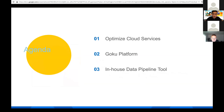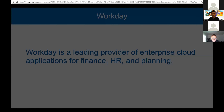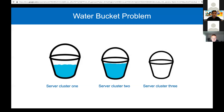Here is today's agenda. First, I'll talk about the problems we're trying to resolve and what our cloud services look like. Afterwards I'll talk about the Goku platform — our in-house platform. Lastly I'll talk about our in-house data pipeline tool, focusing on the motivation and the technology we use to build it. Workday is a leading provider of enterprise cloud applications for finance, HR, and planning. We have a lot of cloud customers ranging from small to large, which creates different operational problems.